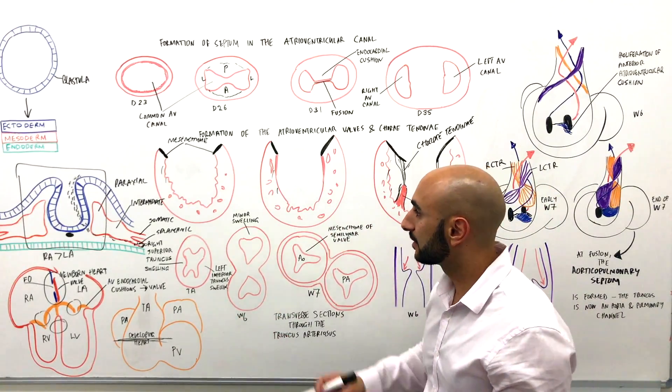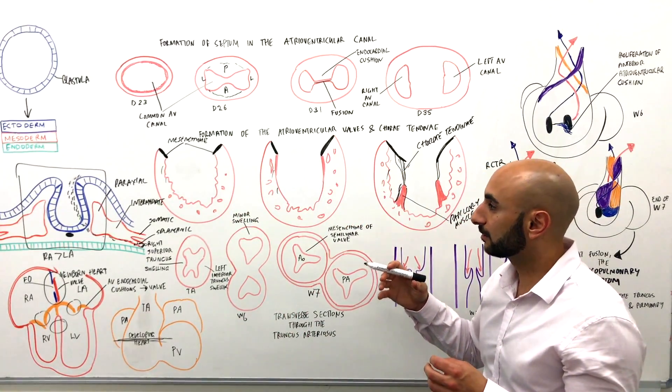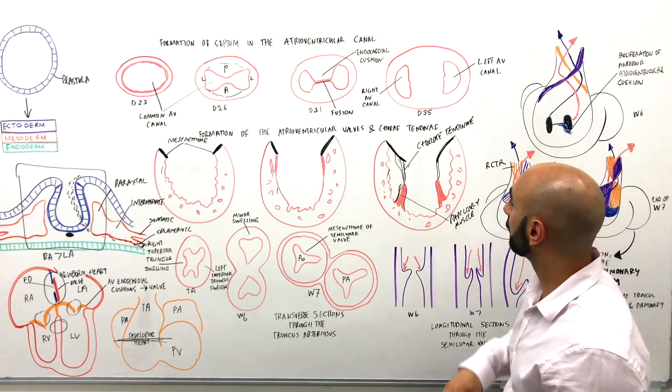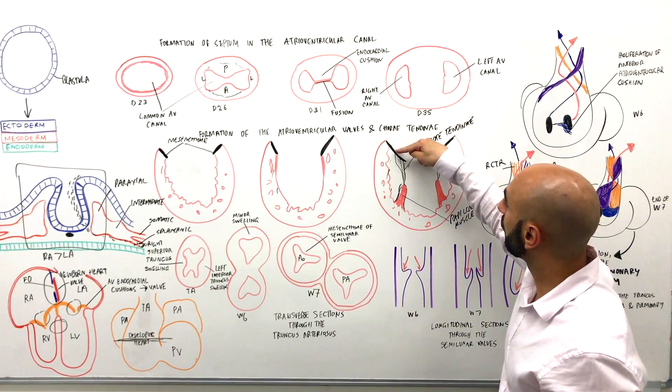Now before the chordae tendineae become the chordae tendineae, they are surrounded by muscle that are degenerated by the blood flow. So essentially all it takes is blood flow just to form the papillary muscle and the chordae tendineae.